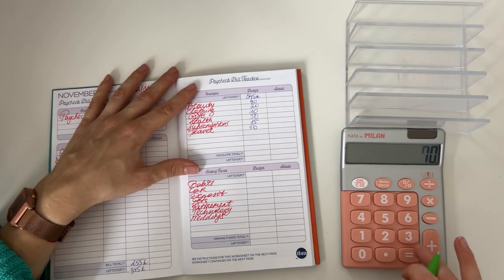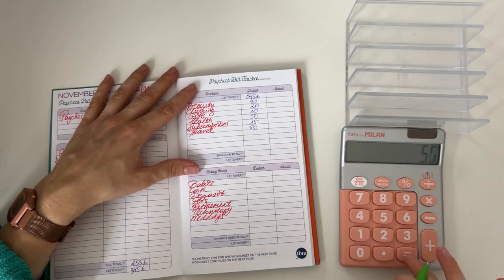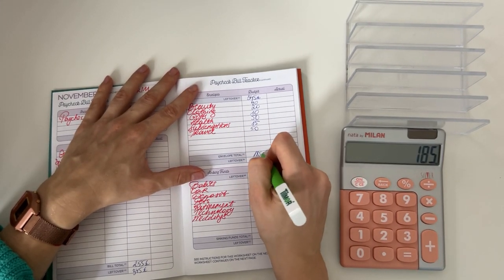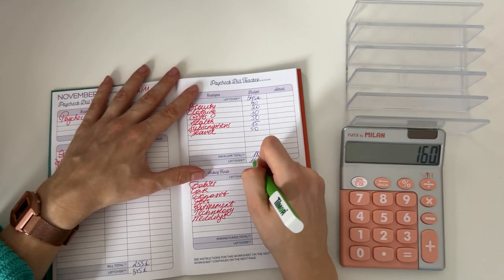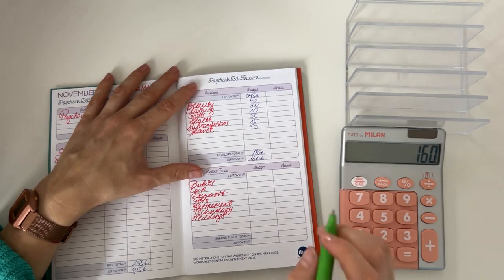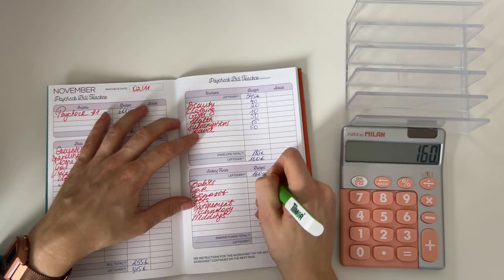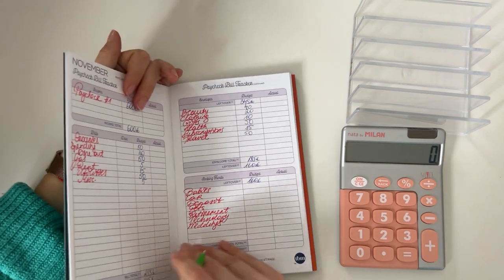So in total for short term sinking funds we are putting 185 euros in there. So 345 minus 185 is 160. And then we're bringing that down here to long term sinking funds.